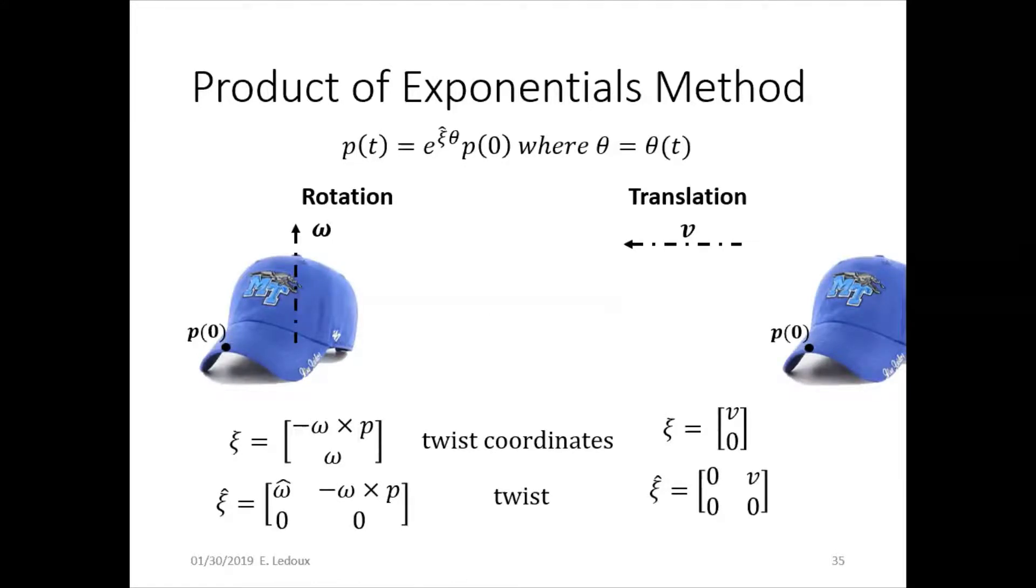ξ is a six by one vector of twist coordinates. So the top half is the linear and the bottom half is the angular motion.